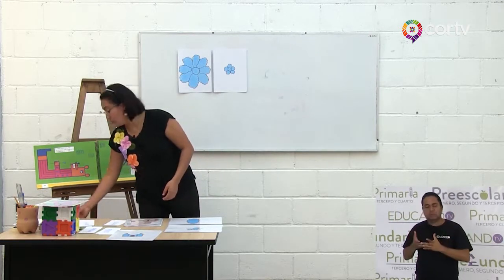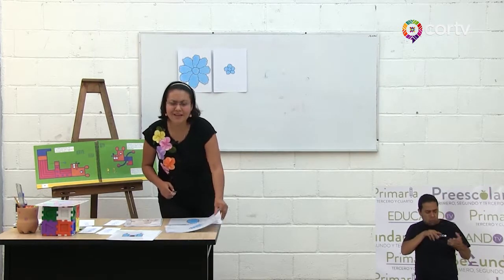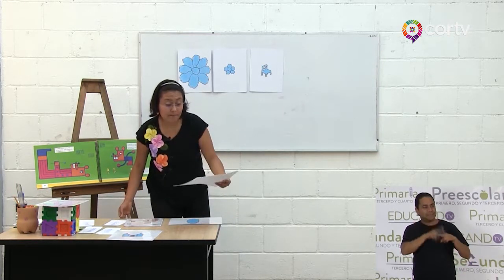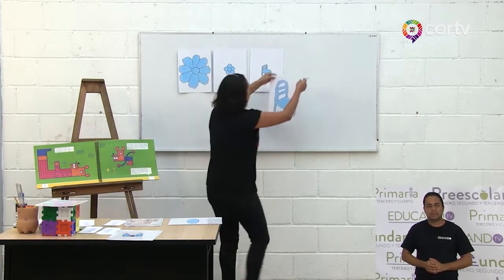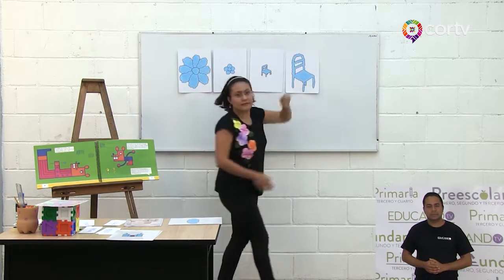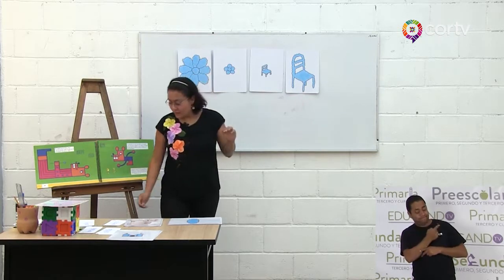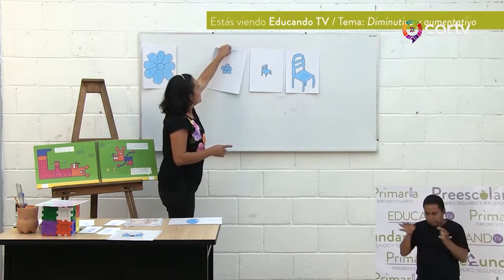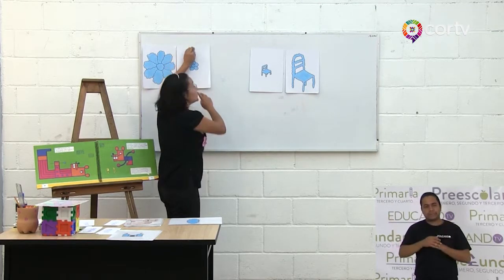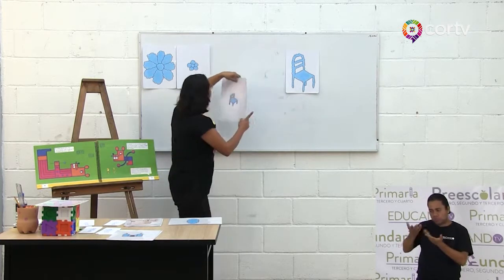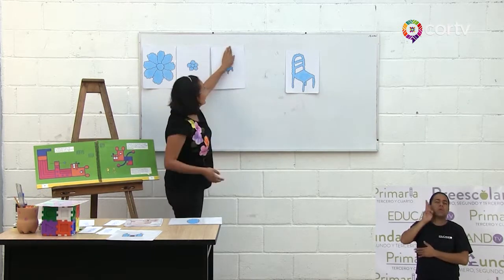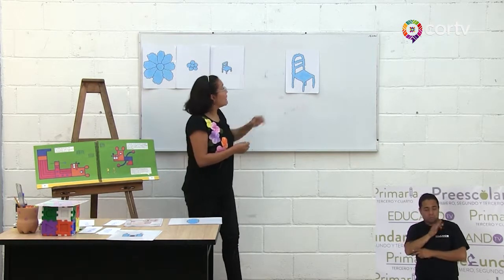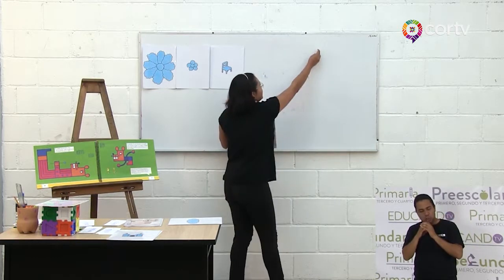¿Qué otra forma había en el cuento? ¿Qué otro dibujo o figura? ¿Recuerdas? Muy bien. Había una silla. Te voy a mostrar también una silla. Vamos a poner dos más. Te pido en este momento que saques tu libreta, tu lápiz, tu borrador, y que intentes ir escribiendo los nombres de las imágenes que estás observando, como flor, silla, pero además que observes que una flor es más grande que otra y que una silla es más grande que otra.